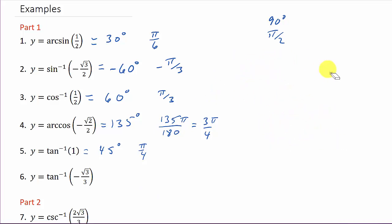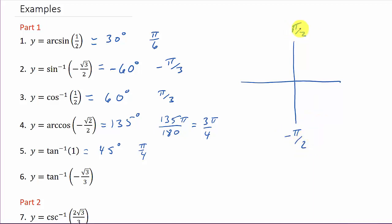What about inverse tangent of negative √3/3? Tangent goes from π/2 to negative π/2, but those endpoints are not included because tangent is undefined at 90 and negative 90 degrees. Tangent is negative in the fourth quadrant, and since our range covers the fourth quadrant, we're down there. The inverse tangent of positive √3/3 is 30 degrees, so in the fourth quadrant the answer is negative 30 degrees, or in radians negative π/6.